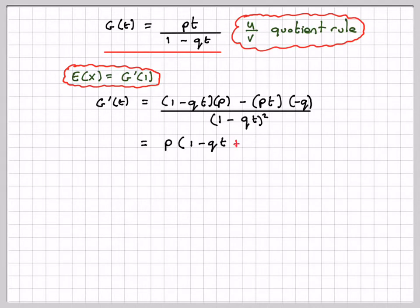So this is going to be equal to p coming out as a common factor, and we've got 1 minus qt plus qt (1 minus qt minus minus, so it's plus qt) with the p coming out, over (1-qt)².